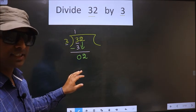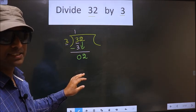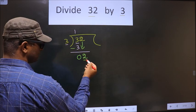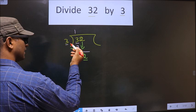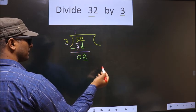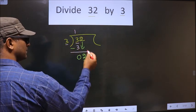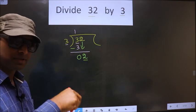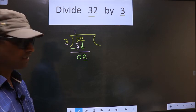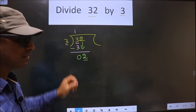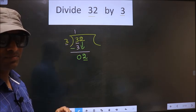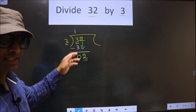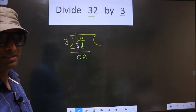Now here is where many make the mistake. The mistake is this: here we have 2, and 2 is smaller than 3. So what many do is, they take the decimal and put 0 here, which you should not do at this step. You brought this number down — that's it. You cannot do both bringing the number down and also adding the decimal and 0 at once.